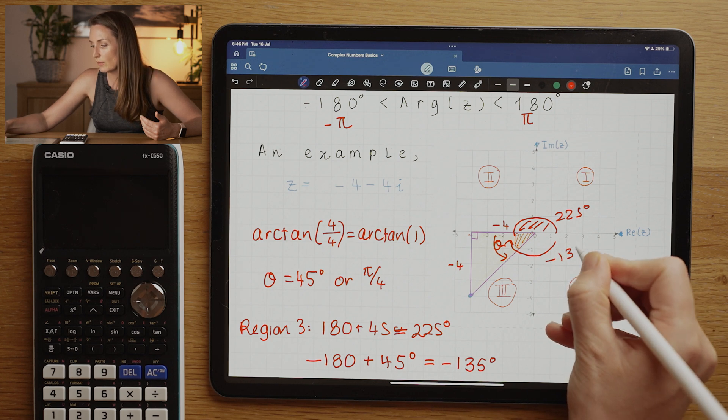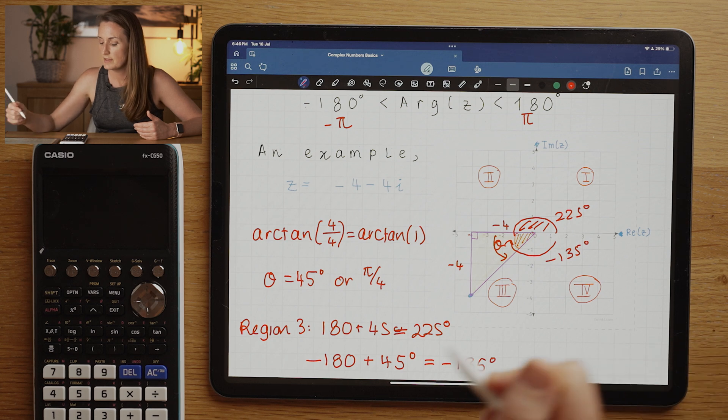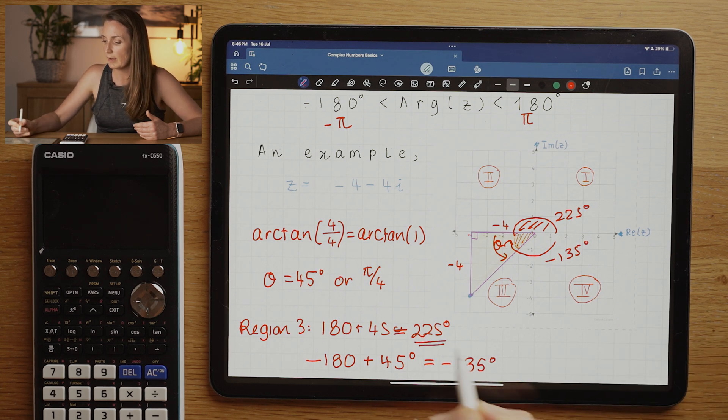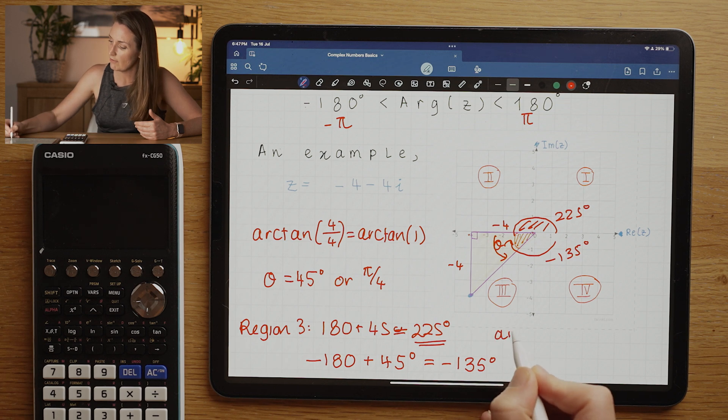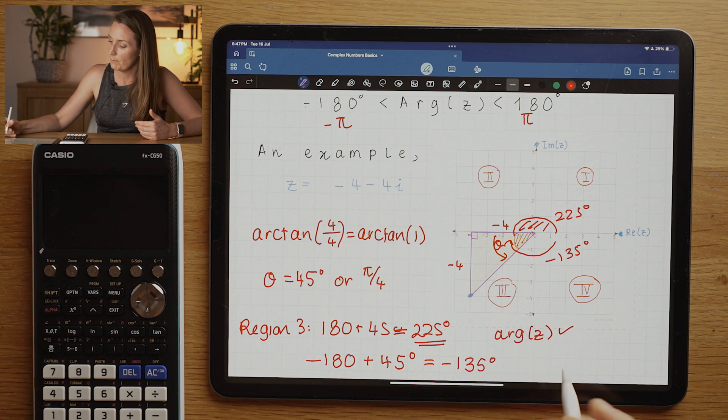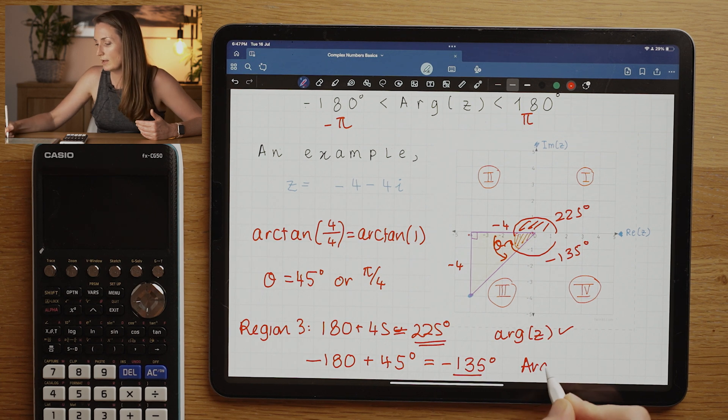You can kind of think that if I go 225 degrees here or minus 135 degrees, in the end I'm going to end up the same place. The difference is that this would be okay for the argument form with a little arg, so this would be okay for arg z.